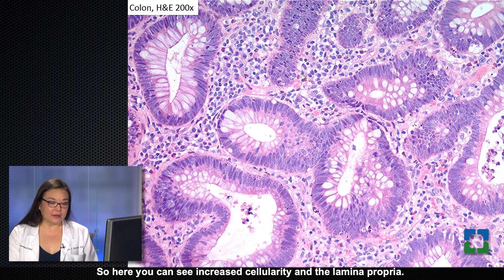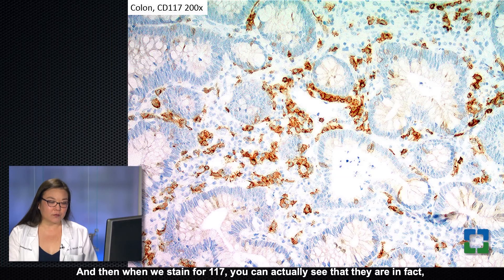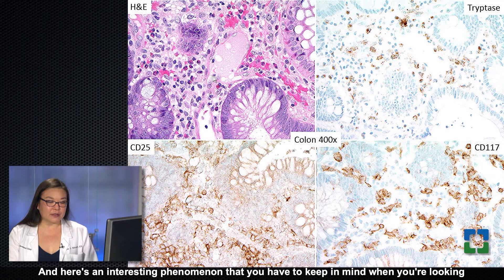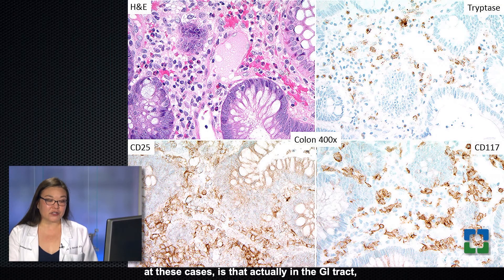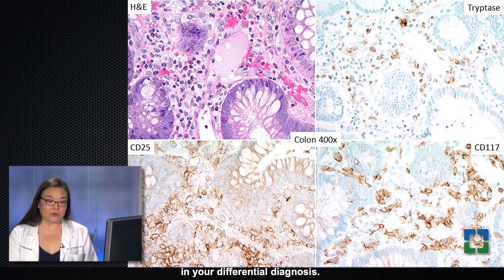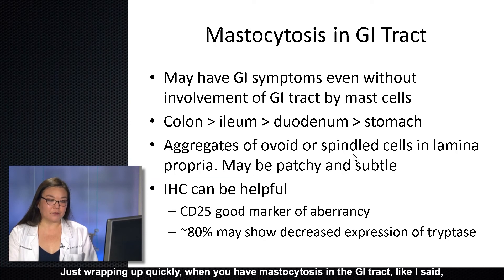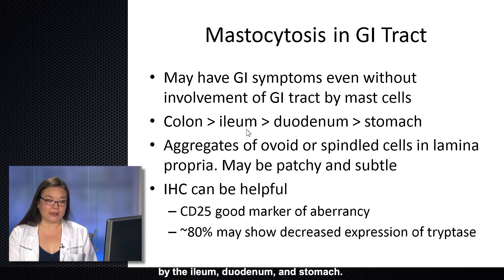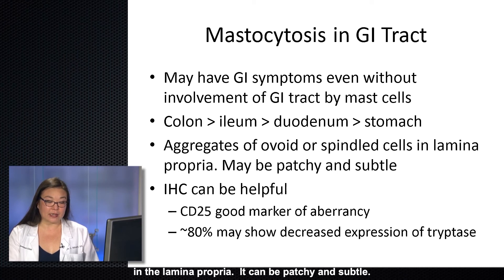He was having diarrhea, and that is something you can have with mast cell disease because of the inflammatory mediators that are released, but you can also have direct tissue involvement. In the colon biopsies, you can see increased cellularity in the lamina propria. When we stain for CD117, you can actually see that there are scattered mast cells aberrantly expressing CD25. It's important to note that in the GI tract, mast cells tend to underexpress tryptase, so you want to be sure to do your full panel of immunohistochemical stainings if mastocytosis is in your differential.